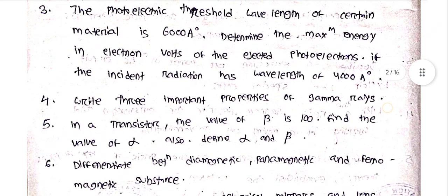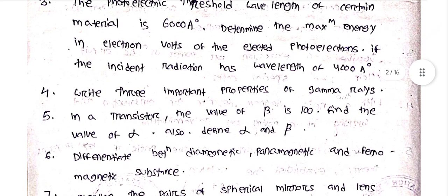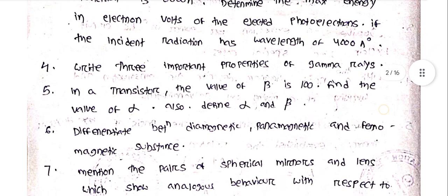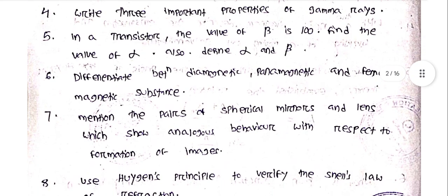Write three important properties of gamma rays. In a transistor the value of beta is 100; find the value of alpha. Also define alpha and beta. This question comes in the exam.